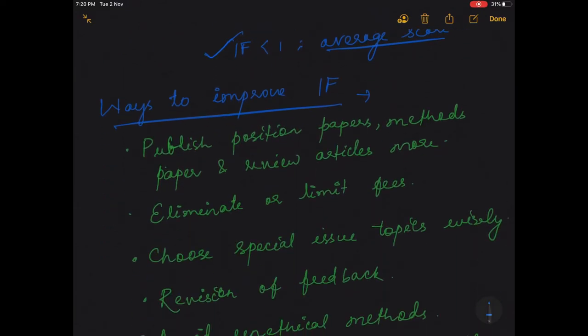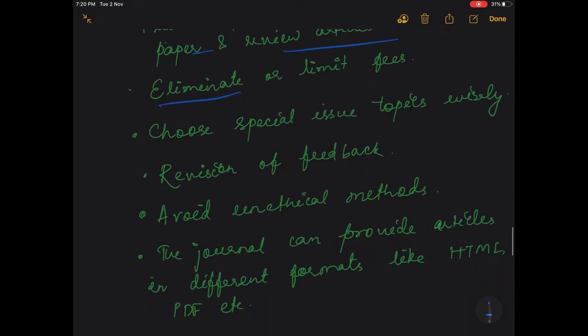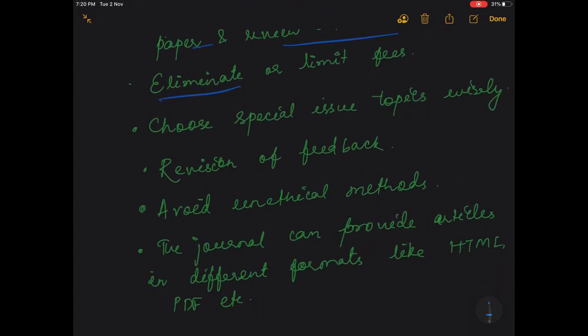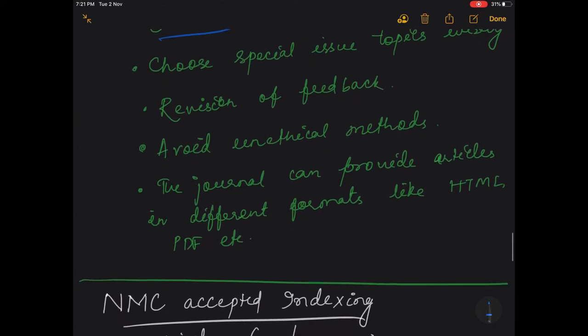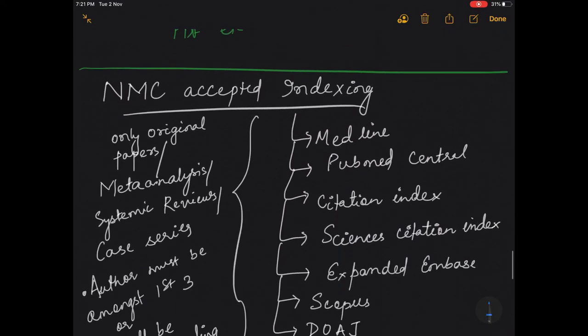Now how can we improve the impact factor of a particular journal? The impact factor can be improved by publishing position papers, methods papers, and review articles more. The fees of the journal can be either limited or they may be eliminated. Choose the special issue topics wisely in order to improve the impact factor. There has to be revision of the feedback from the authors and avoid unethical methods. Apart from that, the journal can also provide the articles in different formats like HTML or PDF.